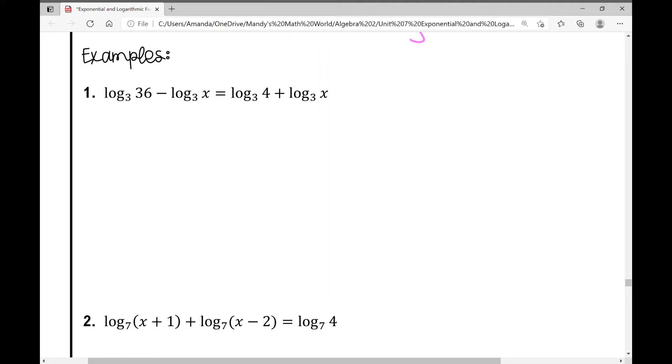We're going to condense each side to a single logarithm. I have subtraction here that signifies division. So log base 3 of 36 divided by x equals, I have addition here that signifies multiplication, log base 3 of 4x. We've condensed each side to a single logarithm and because we have the same base for our logs on both sides, those can cancel out and I can set 36 divided by x equal to 4x.